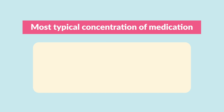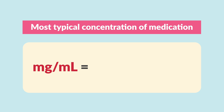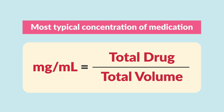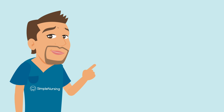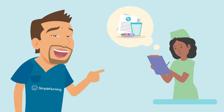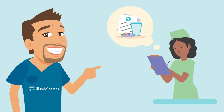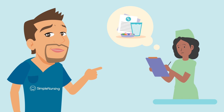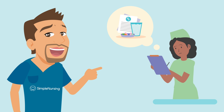The most typical concentration of a medication we are going to see in the hospital setting is a concentration of milligrams per ML, or total drug versus total volume. Use drug calculations when calculating the quantity of medications needed for a patient and the strength of medication is already known.